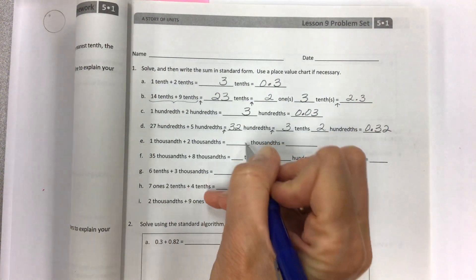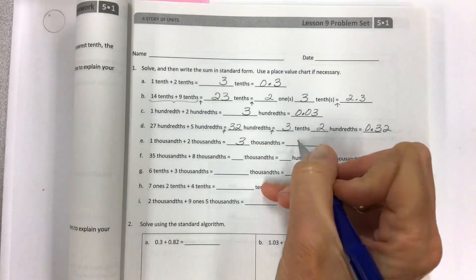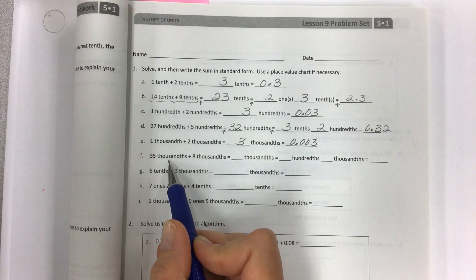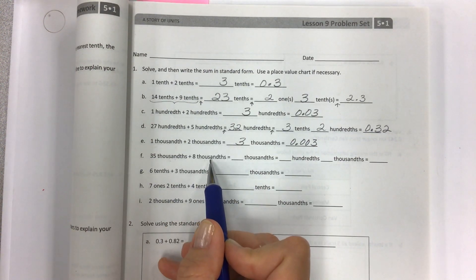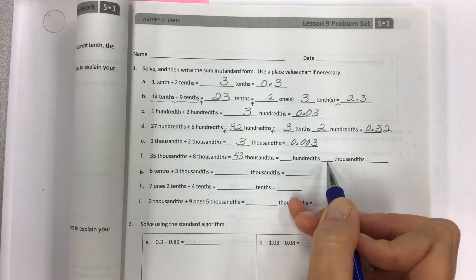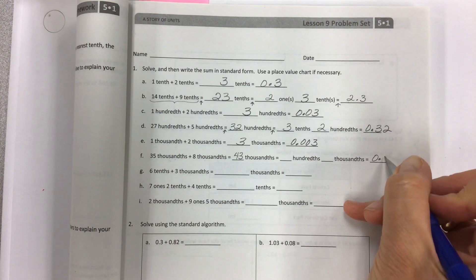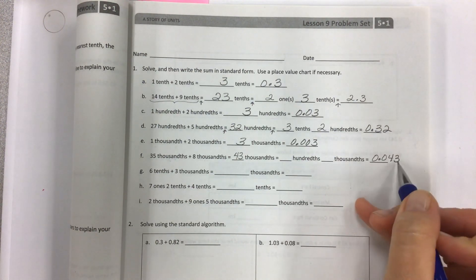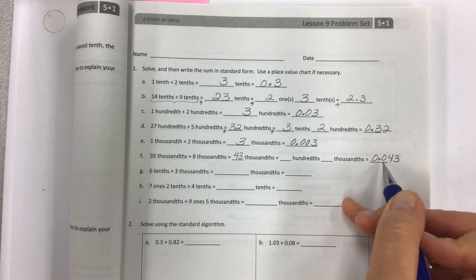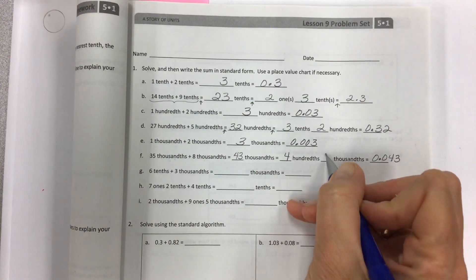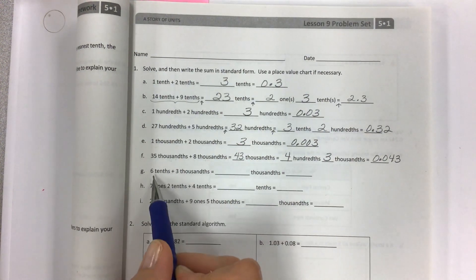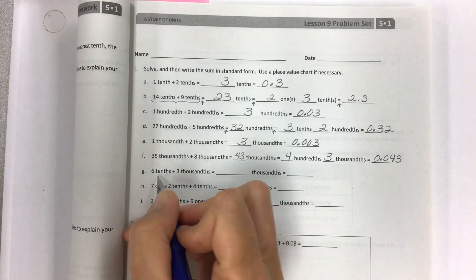Then we get into thousandths. Be real careful: 1 thousandth plus 2 thousandths, all the same unit, makes a total of 3 thousandths. We have same form here: thousandths plus thousandths makes 43 thousandths. What does that look like when broken apart? 43 thousandths in proper standard form—the 4 is in the hundredths place and 3 is in the thousandths place because that's how you're reading it.